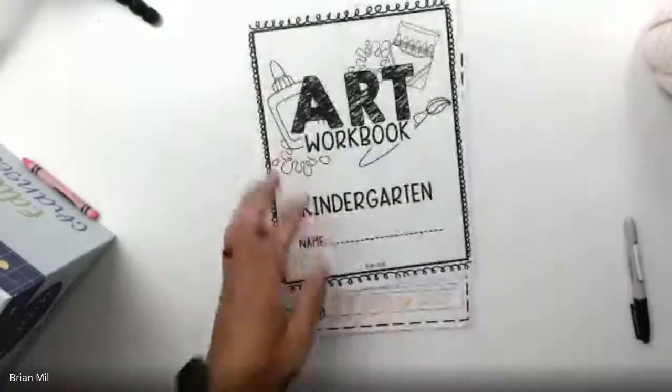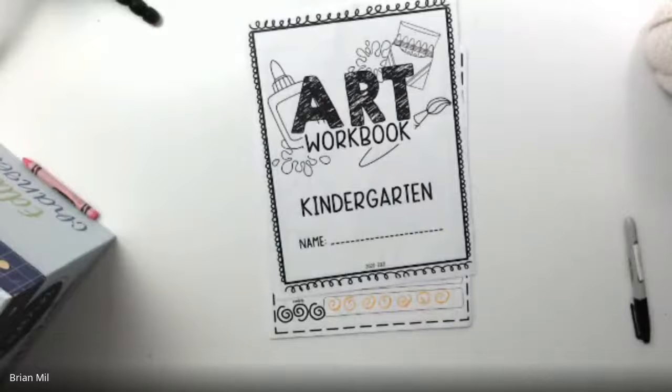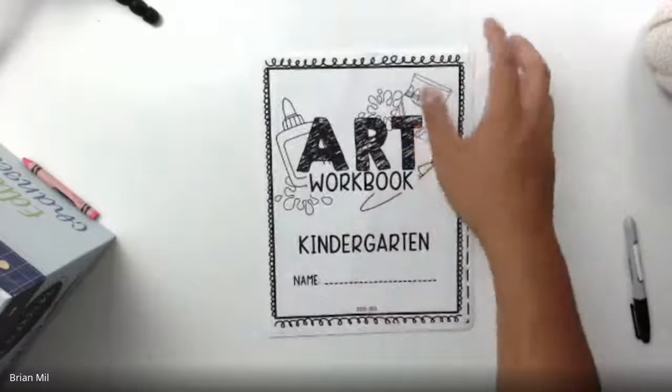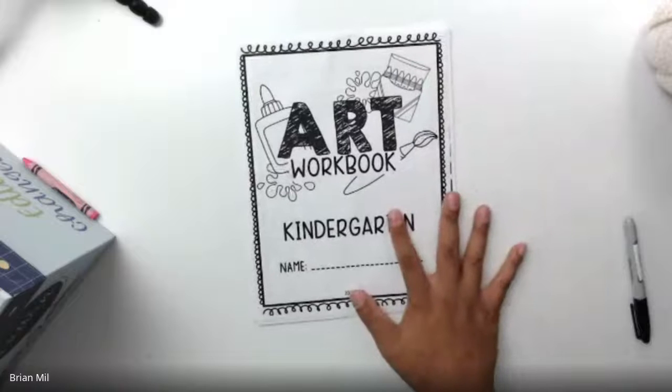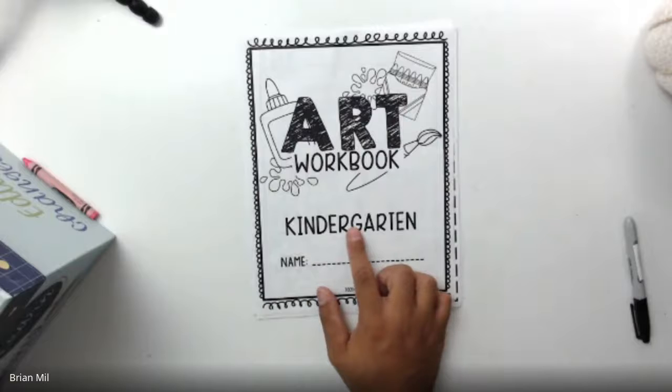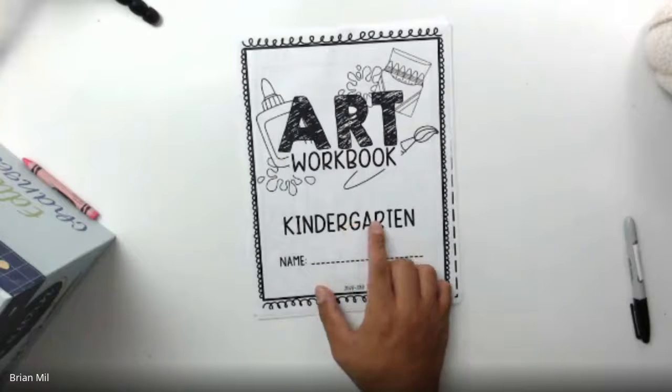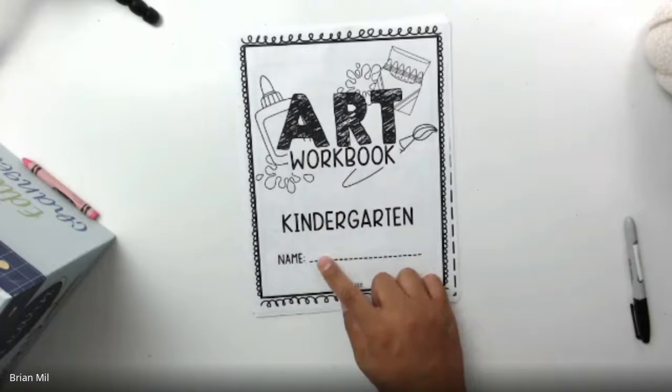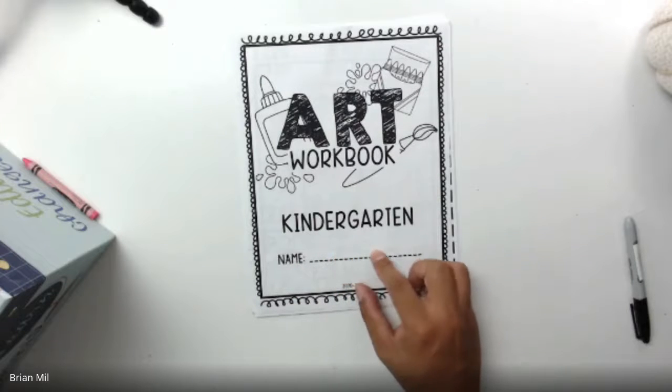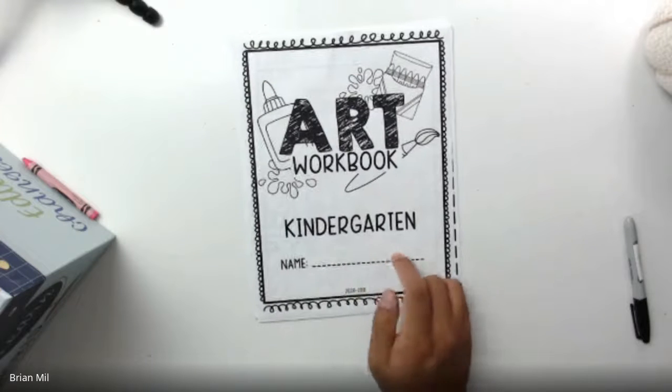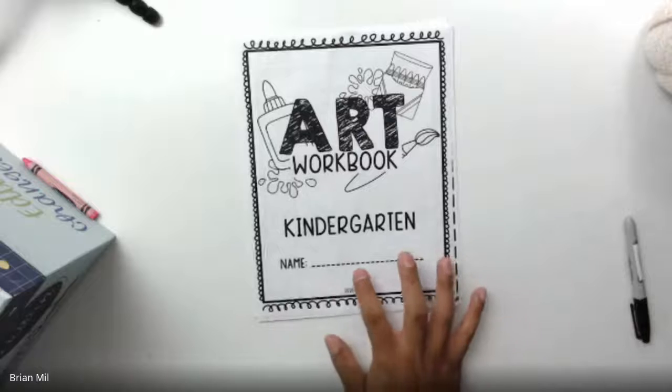All right, there we go. So now you guys are seeing my table and the artwork book that we're gonna be using today. With our workbook it says kindergarten, make sure it says kindergarten because that's what you guys are. And then on the bottom here it says name, if you guys can put your name right here if you haven't done so yet, make sure you put your name right there. All right, good job.